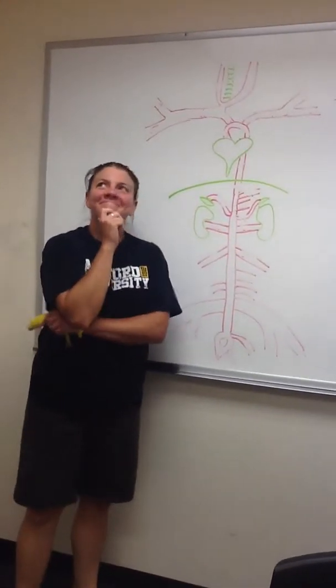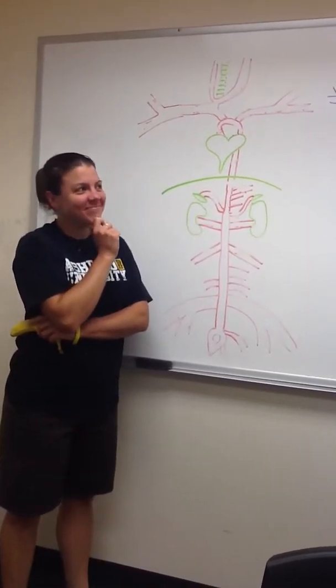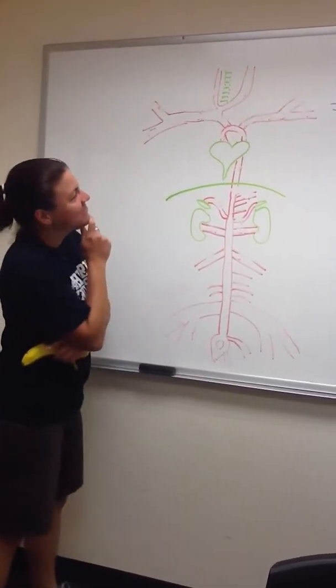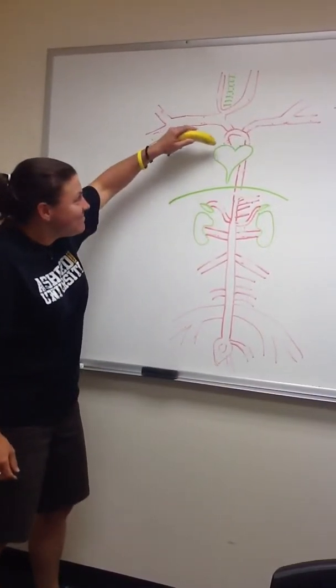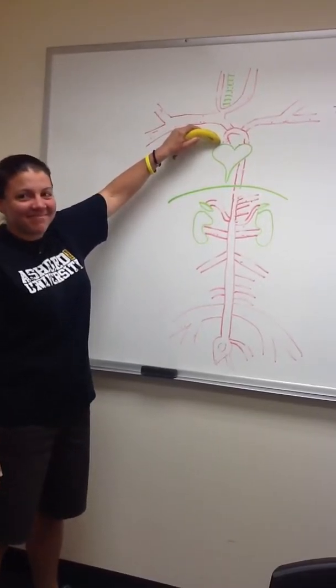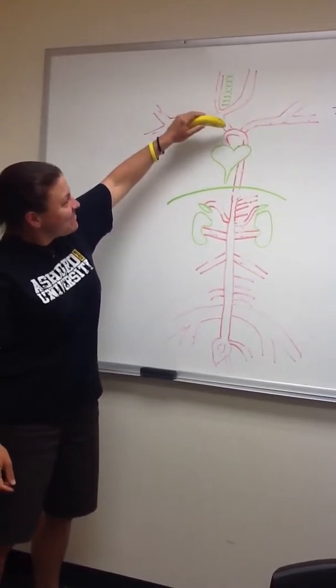So the other day I was wondering, where does the blood go when it leaves the heart? Well, it starts off in the pulmonary trunk, and then it goes to the ascending aorta.